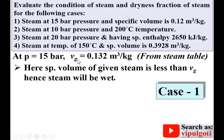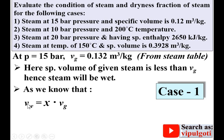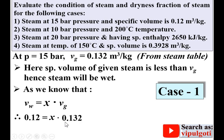Since the given specific volume of 0.12 m³/kg is less than Vg of 0.132 m³/kg, the steam is wet steam — it is not dry saturated steam. Now to find the dryness fraction, we use: specific volume of wet steam = x × Vg. So 0.12 = x × 0.132, giving dryness fraction x = 0.91.